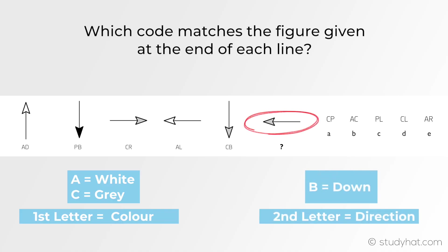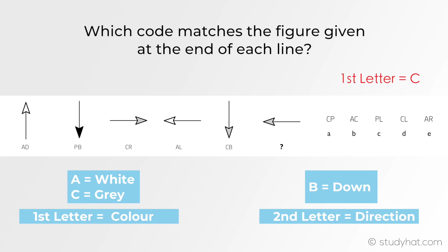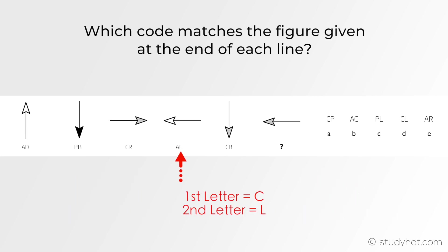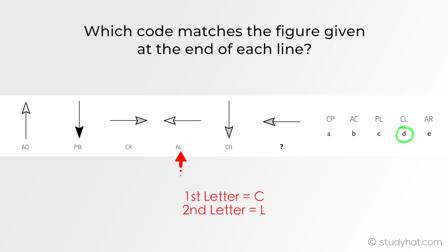Going to the figure we need to find the code for, let's start with the first letter, which is shading. We need a figure with grey shading — there's one here and one here, so the first letter is C. For the second letter, which represents direction, we're looking for a figure facing west — that's AL right here. All we need is the second letter, so our code is CL, which is the answer D. Double-checking: C represents grey, which matches, and L represents the same direction, which also matches. The answer is CL.